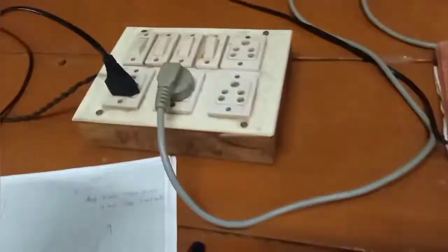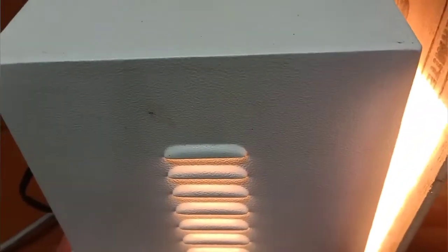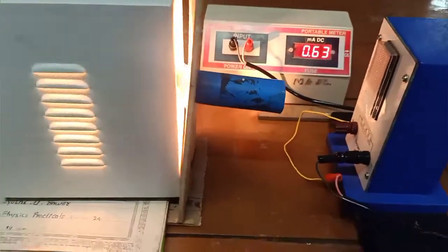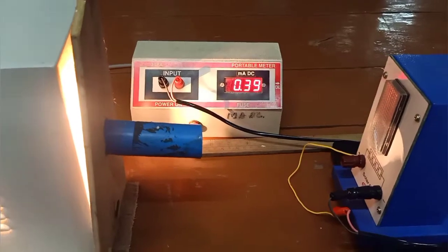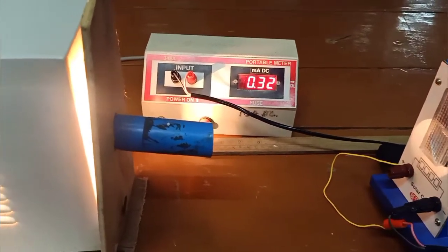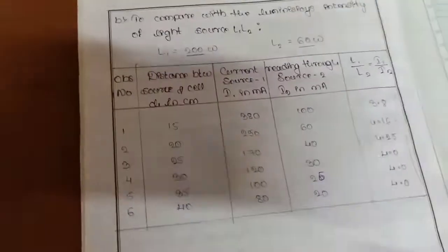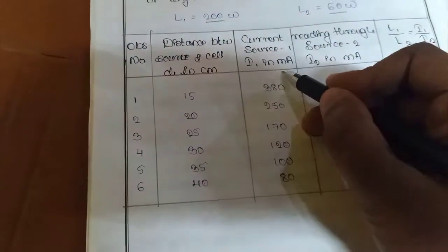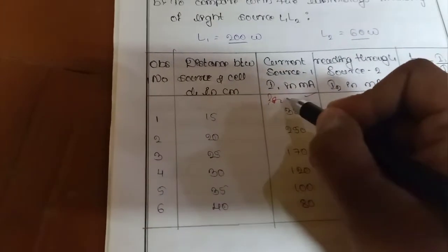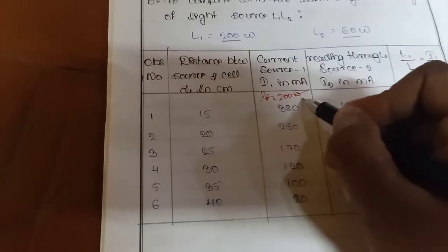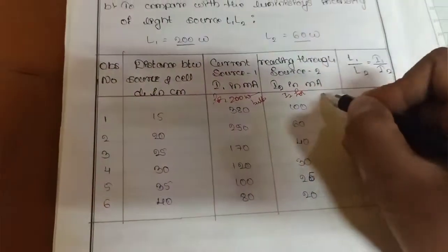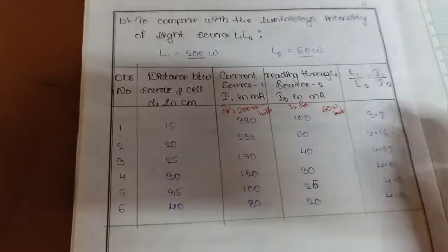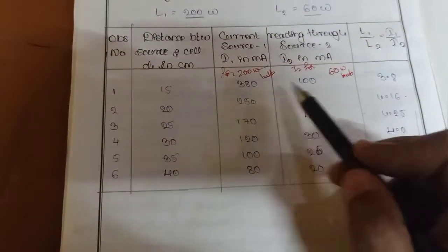Turn on the lamp and take the readings — starting at 10 centimeters, then 15 centimeters, 20 centimeters, up to 40 centimeters. Record readings as I1 for the 200-watt bulb and I2 for the 60-watt bulb.